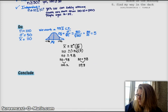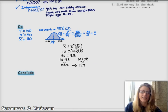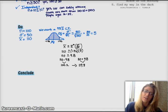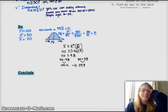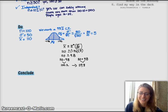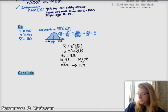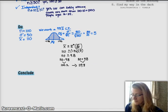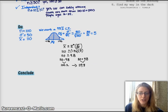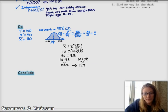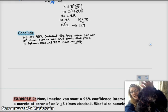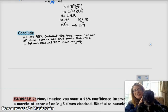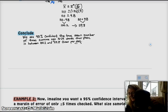I just did all my calculations. 1.96 times 5 is 9.8. Then I take 110 and subtract 9.8, and 110 and add 9.8. That is my confidence interval. When we conclude, we want to say we're 95% confident that the true mean number of times we check our phone is between 100.2 and 119.8.